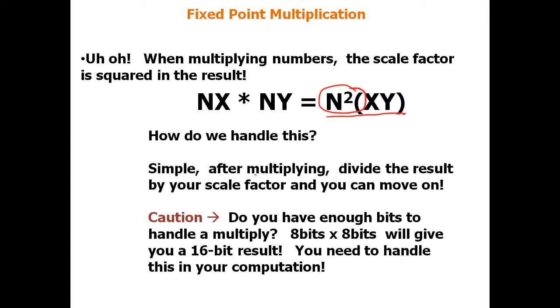So what do we do with this? It's simple. After multiplication, divide the result by the scale factor, and you can move on. And that'll get us back to, if we divide this result by n, we get rid of this n squared. Now, we're going to see later that this is not always true. You don't always need to divide that out because you might want a higher precision intermediate result in a computation. But if you want to get back to your original scale factor, you need to do the division.